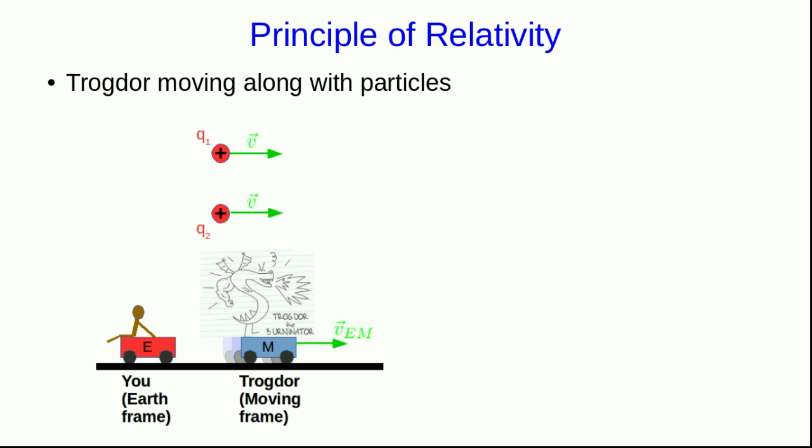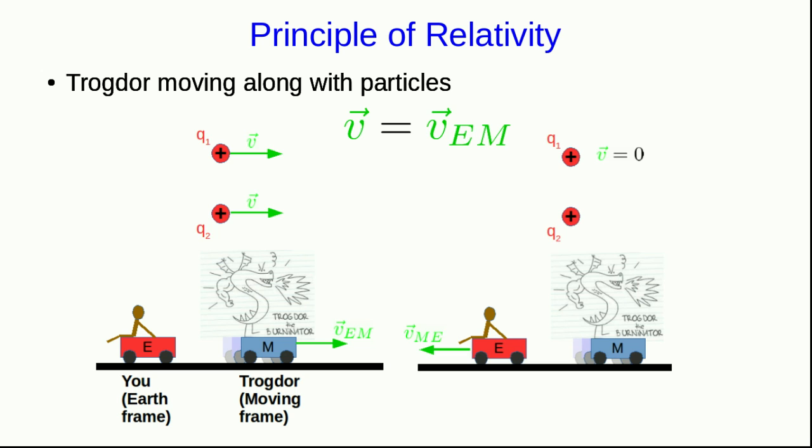Trogdor, the burninator, meanwhile, is in a moving frame. He's moving along, and he is moving, let's say, at the same velocity as those particles. So according to Trogdor, those particles are stationary.